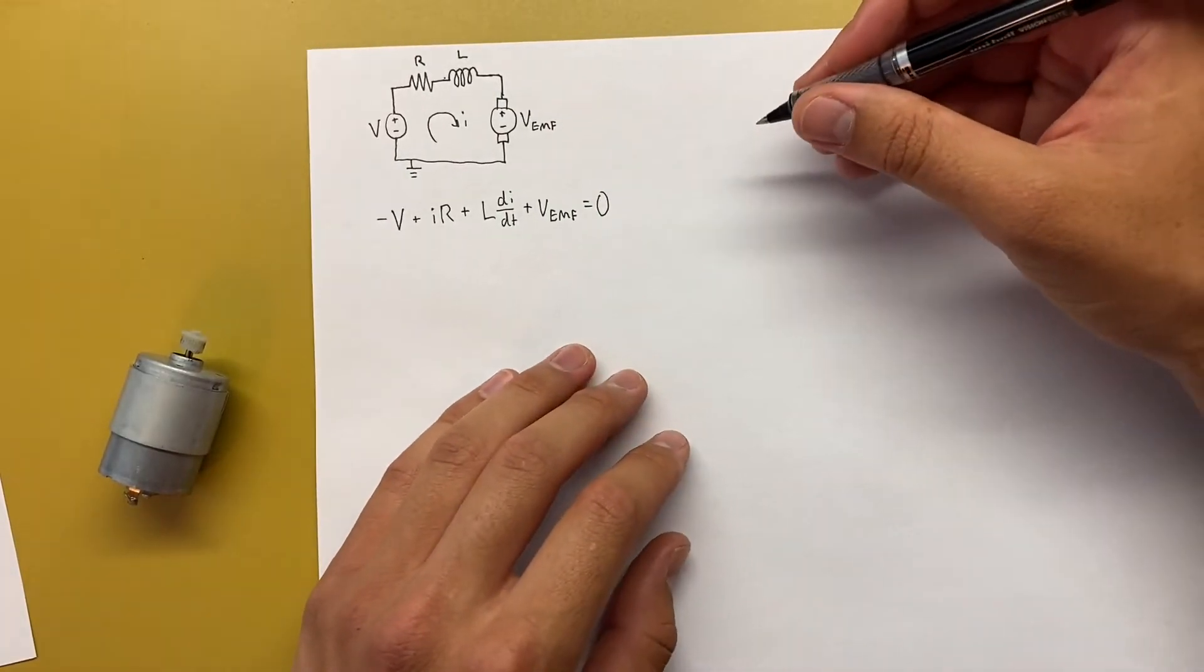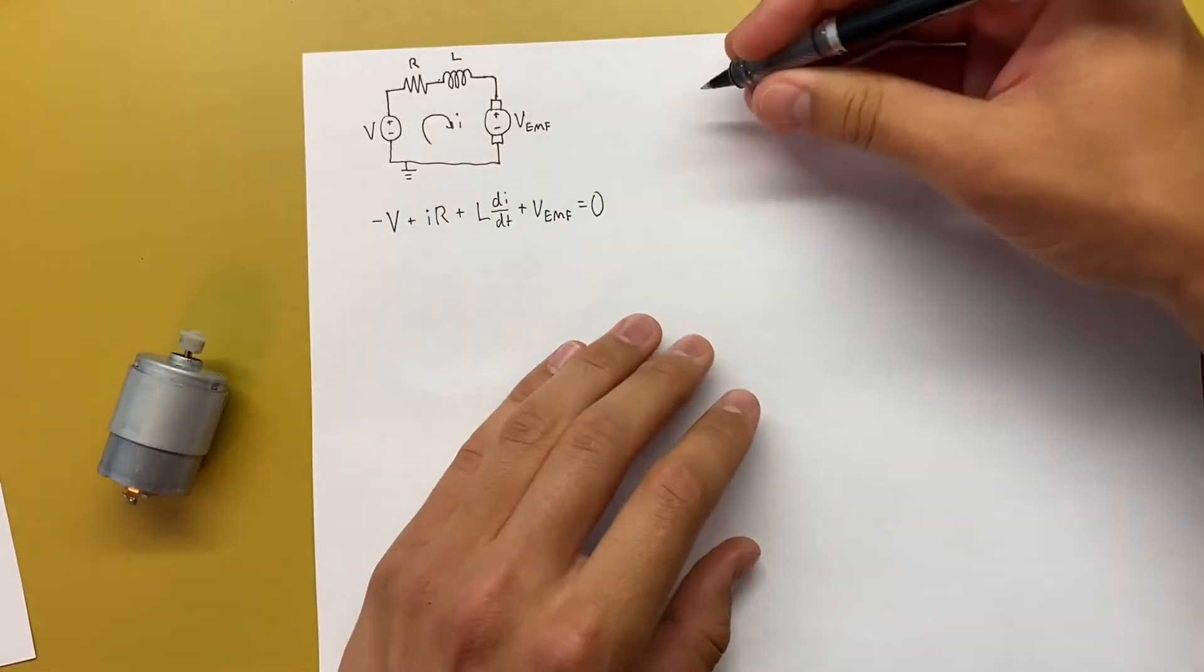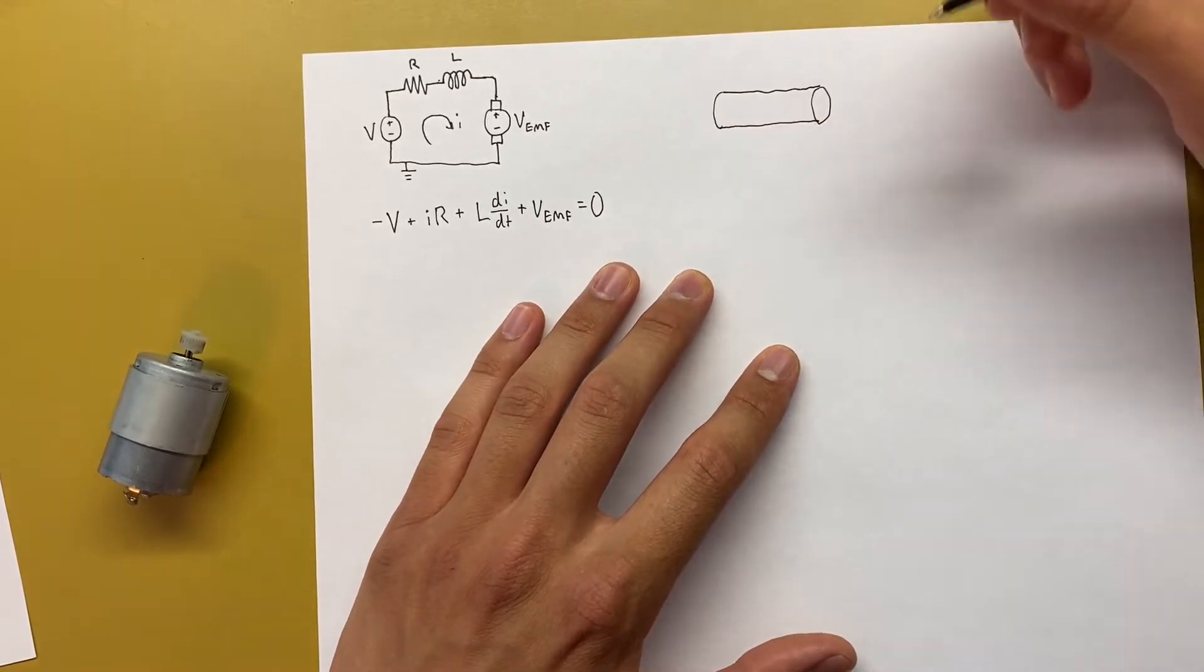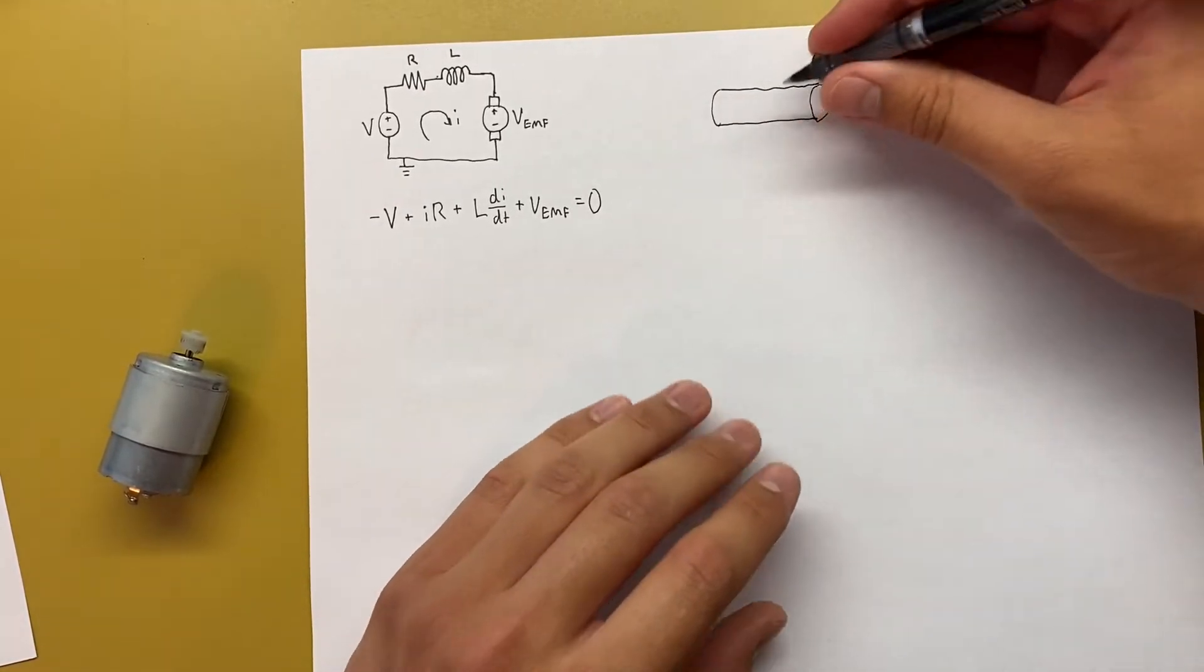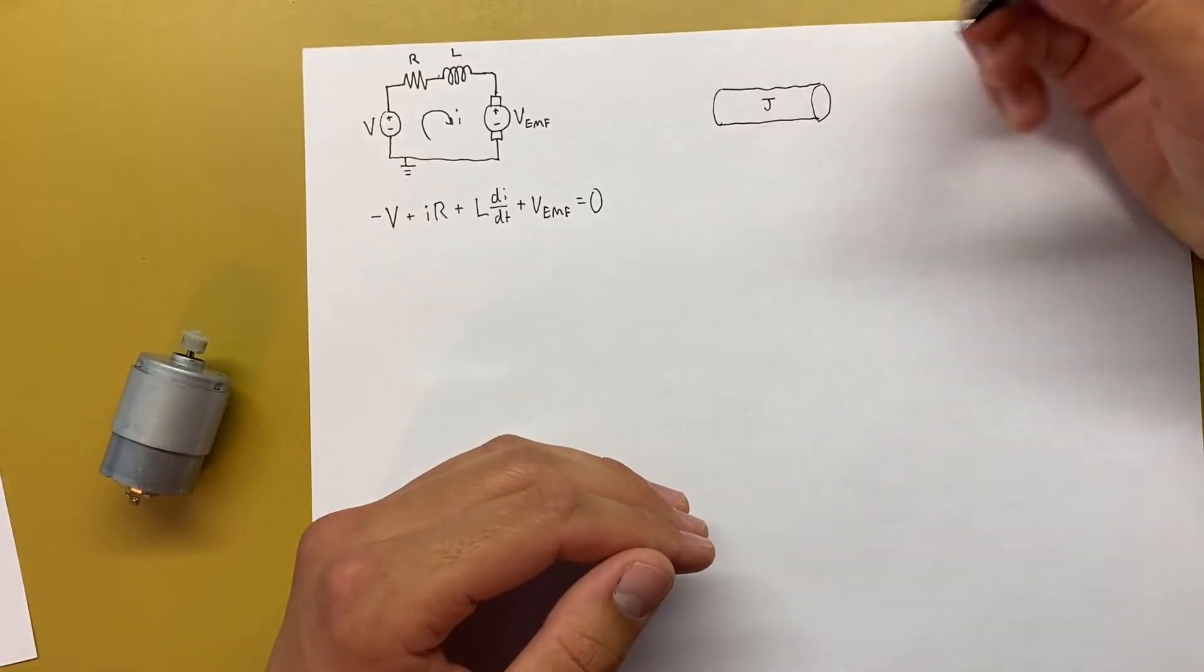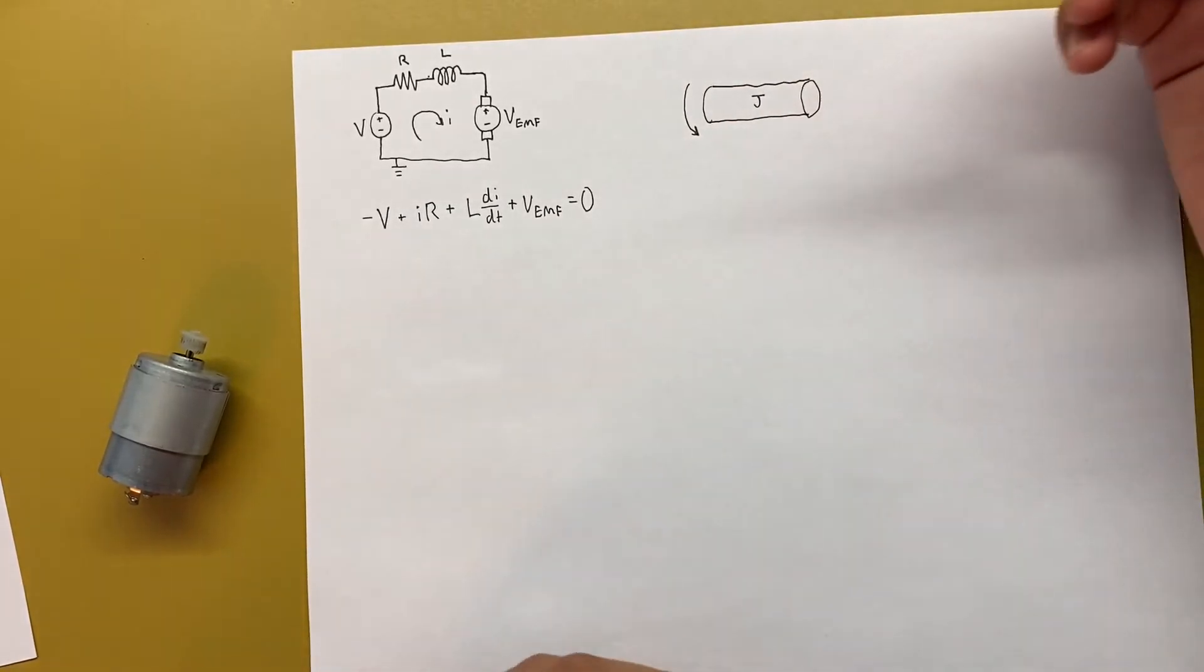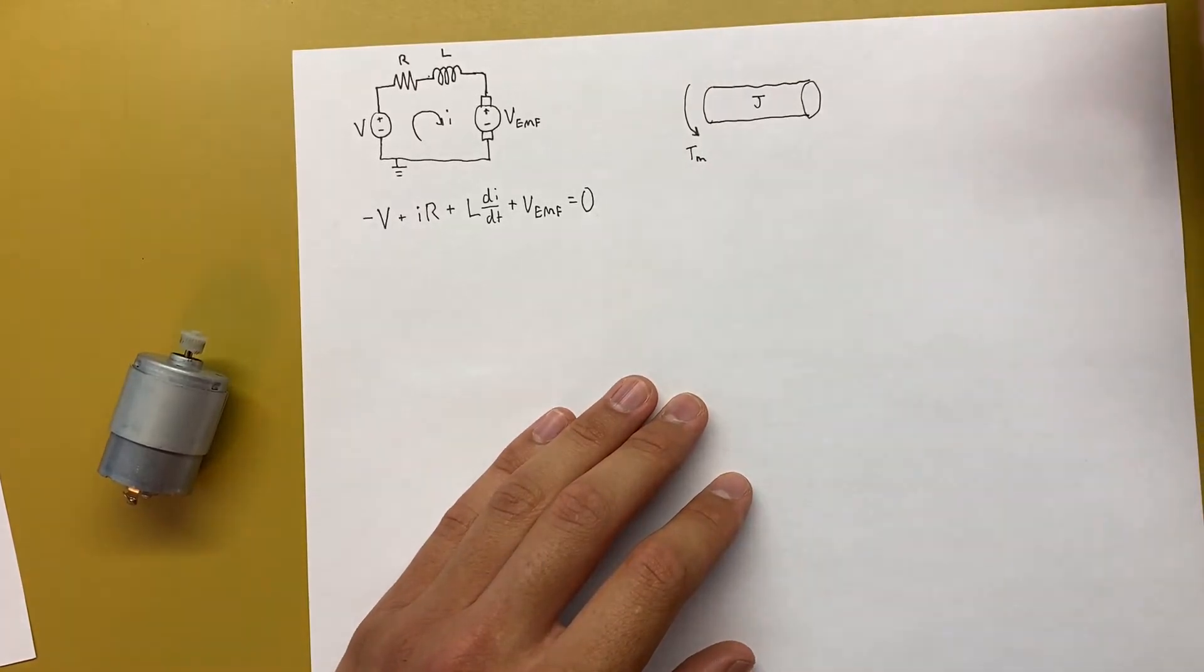Now we can look at the mechanical side of the motor. So we know that there's an armature inside of the motor, and it has some mass. So we'll go ahead and draw that, just going to draw a cylinder here, keep it simple. So that mass is going to cause it to resist turning, and that resistance is known as the moment of inertia, or J. And on one end, we know that we're putting a torque into this, because the circuit adds a torque to the mass, and that's what makes it spin. So we'll just call that TM for the torque of the motor.